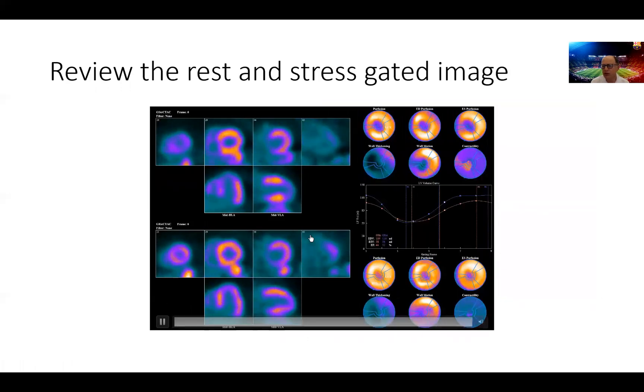The next images are the gated images, the rest being on the bottom, stress images are on top, and right away your eye is drawn to the fact that the left ventricle has some minor wall motion abnormality in the apex, which is exaggerated during the stress where the apex becomes akinetic.